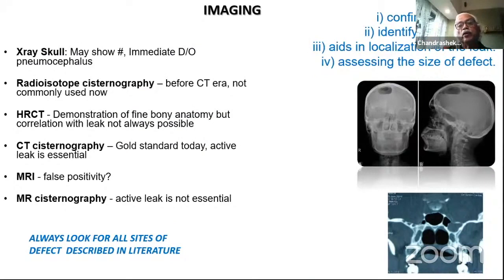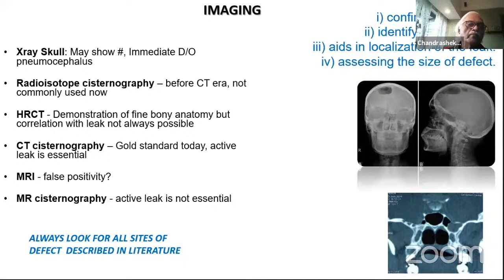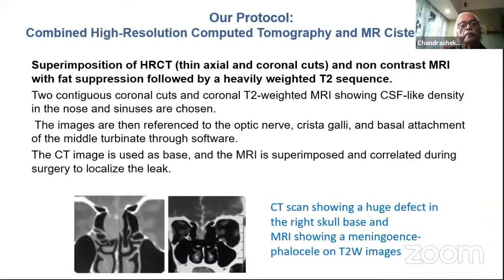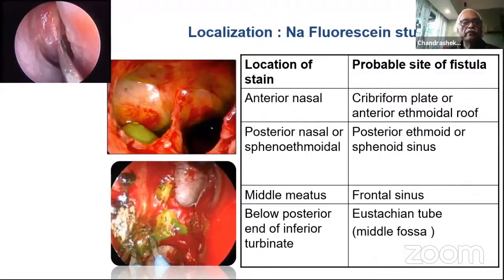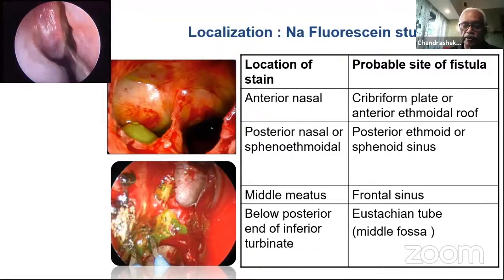Imaging is important not only to confirm the leak but to identify the cause, localize the site, and assess the defect size. Simple X-ray skull showing pneumocephalus can sometimes guide treatment. Radio-isotope cisternography was the mainstay before the CT era, but nowadays we depend on HRCT, MR cisternography, and CT cisternography for persistent leaks without signs of raised intracranial pressure. Our protocol uses combined high-resolution CT with MR cisternography, superimposing the images — a technique evaluated in Mumbai and published in AJNR in 1998 with 96% reliability. When no definite site is found, fluorescein during diagnostic endoscopy can help and may allow proceeding directly to repair.